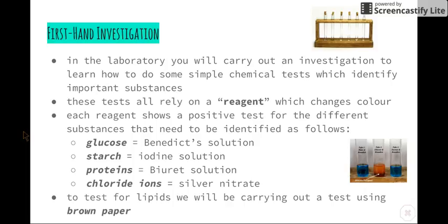So basically, we will have a known solution of glucose, starch, proteins, and chloride ions. And we will be able to test each of those with those different solutions and determine what the positive test is first. And then we'll be given some food substances or food samples that we will then carry out all of those tests again for each sample to see which of those particular substances are found.